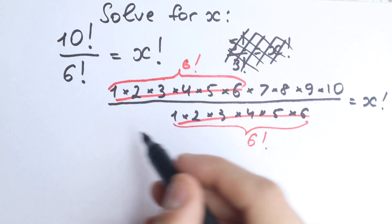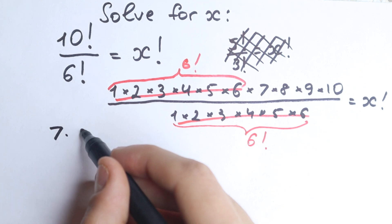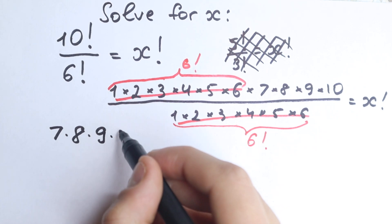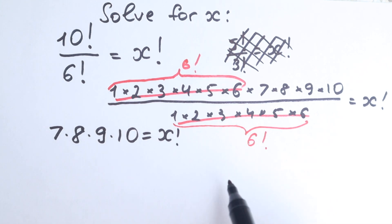So right now we still have this expression, so we have 7 times 8 times 9 times 10, equal to x factorial.